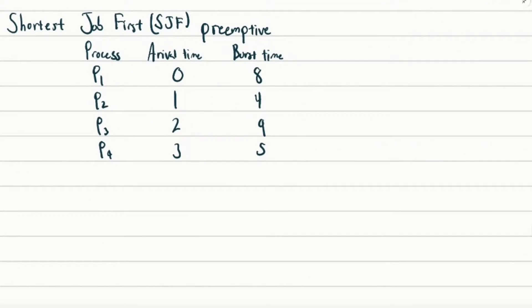Now we're going to go to shortest job first preemptive. It's very similar, but there's another factor to account for: arrival time. If a process arrives with a shorter burst time than the currently running process, it's going to preempt it — essentially kicking it out and taking over. Then after that time period, if another process comes in with an even shorter burst time, it'll kick the previous one out too.